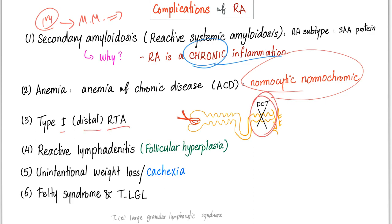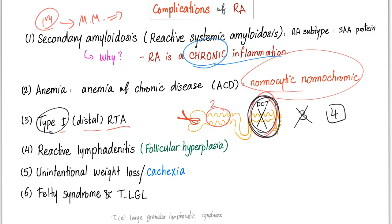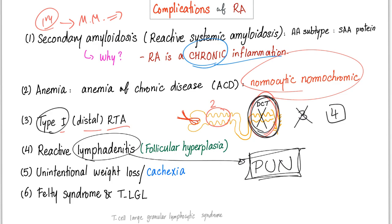Type 1 or distal RTA. Let's review renal tubular acidosis quickly: RTA type 1 affects the distal convoluted tubule; RTA type 2 affects the proximal convoluted tubule; RTA type 3 doesn't exist; RTA type 4 involves low renin and low aldosterone. Next, reactive lymphadenitis or follicular hyperplasia, discussed in the Perfectionalis Ultimate Notebook available on the Patreon page.